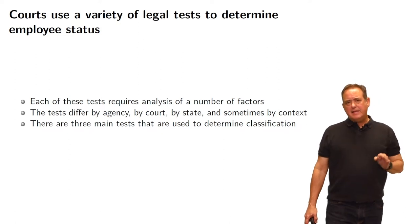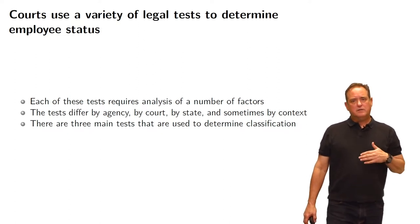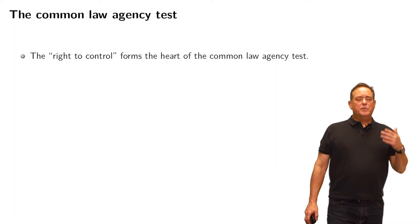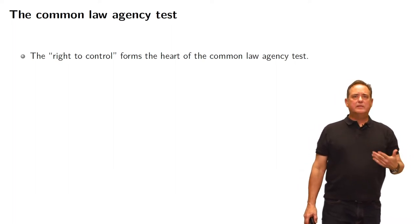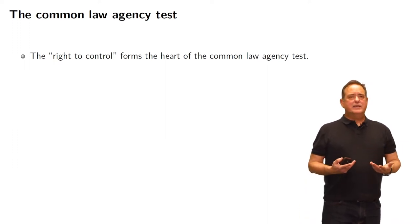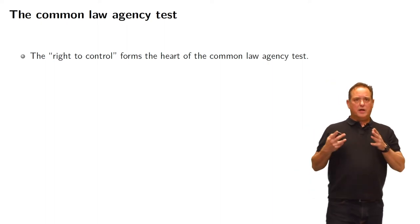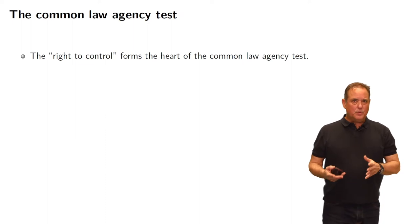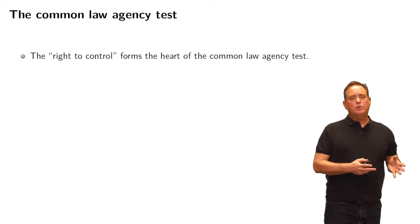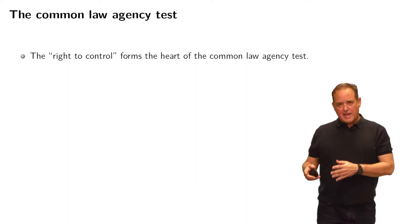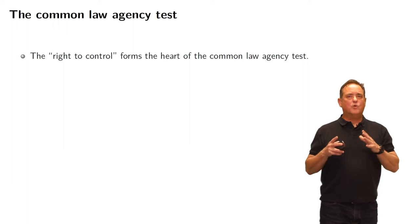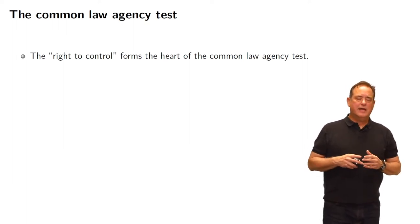There are three main tests we're going to focus on that are used to determine classification. We'll start with the biggest one: the common law agency test. The common law agency test measures whether a person is an employee or not largely based on whether the employer has the right to control the acts of the worker. This right of control forms the heart of the common law agency test.